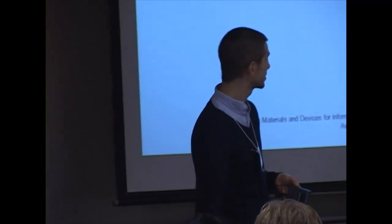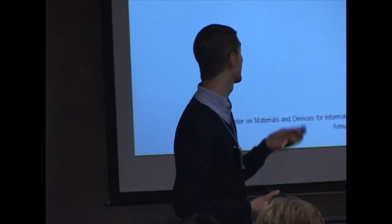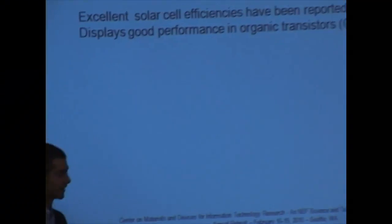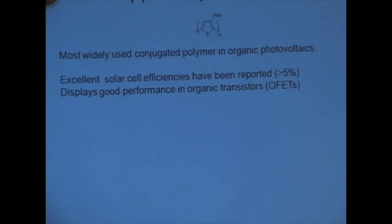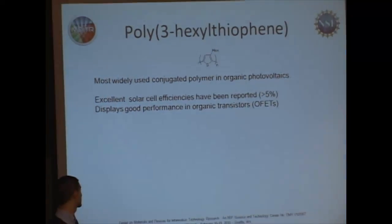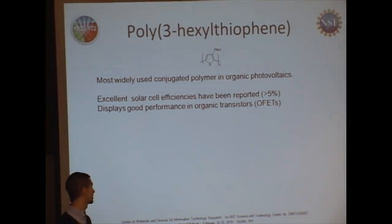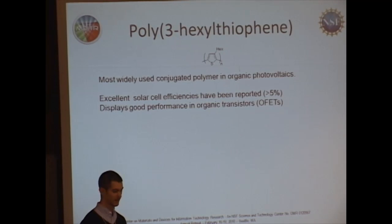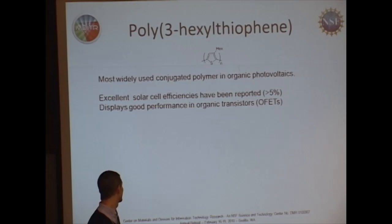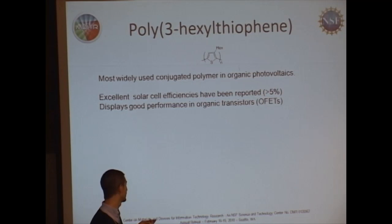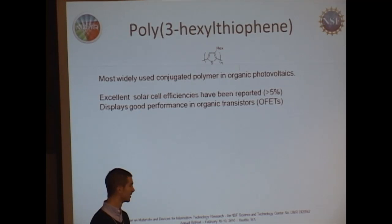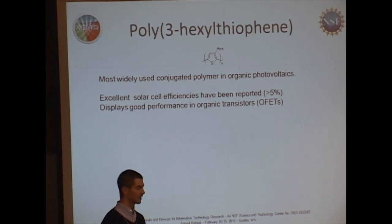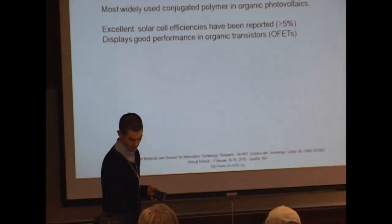I'm not going to give much of an introduction. P3HT is poly-3-hexyl-thiophene, and we've already seen it in both talks. It's probably the most widely used conjugated polymer in the field of organic photovoltaics. You get very good efficiency when you mix it with PCBM, and also very good performance when you use it in a transistor.